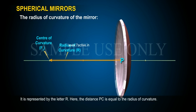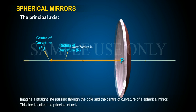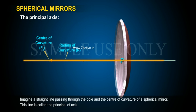The radius of curvature is represented by the letter R. The distance PC is equal to the radius of curvature. The principal axis. Imagine a straight line passing through the pole and the centre of curvature of a spherical mirror. This line is called the principal axis.